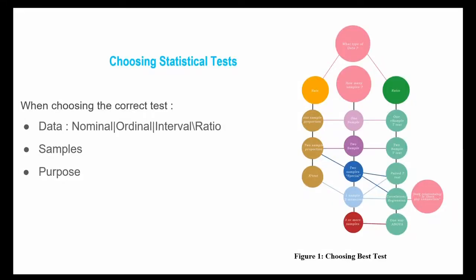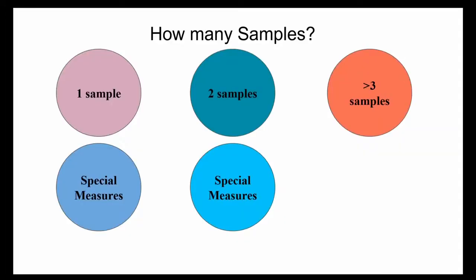Now we need to know how to choose statistical tests, as there are many different tests you can use in statistics and it can be quite difficult to know which test to use. There are three main questions to ask yourself: first, what is the level of measurement for your data? Second, how many samples do you have? Third, what is the purpose of analyzing this data? The main research question is: how many samples are appropriate for your study?